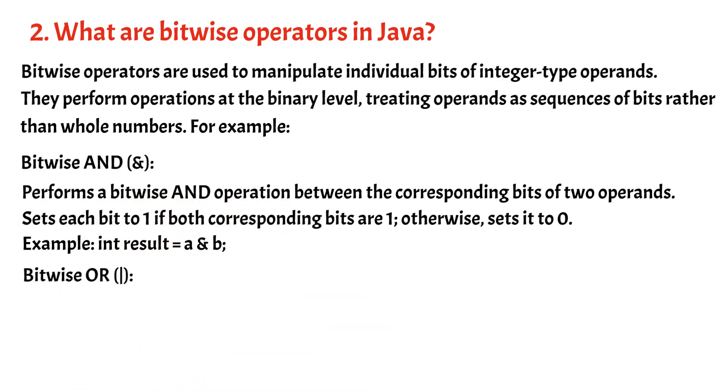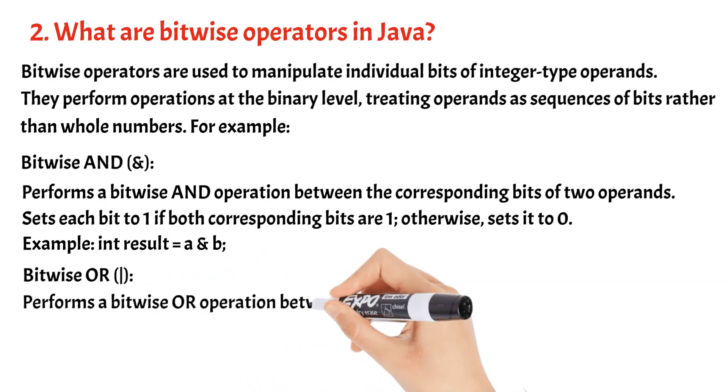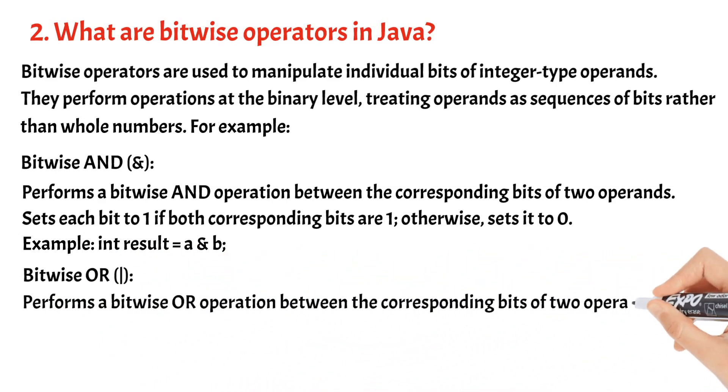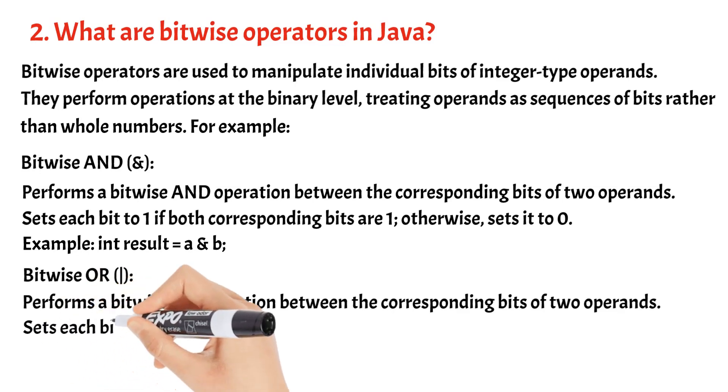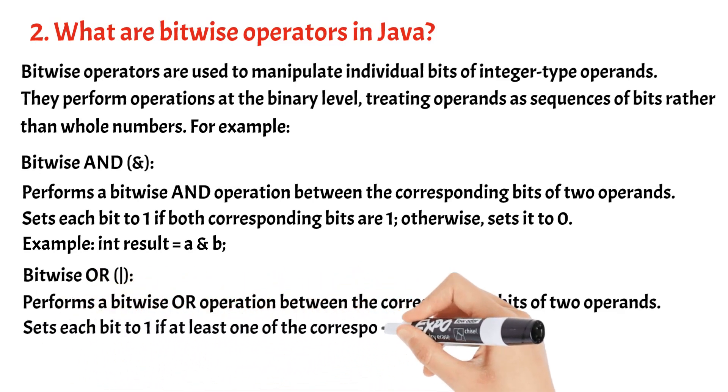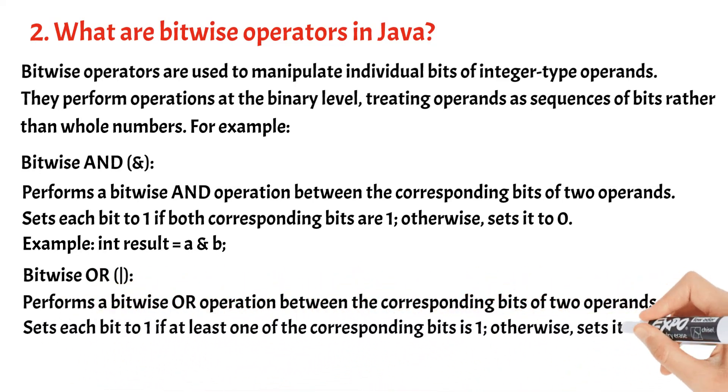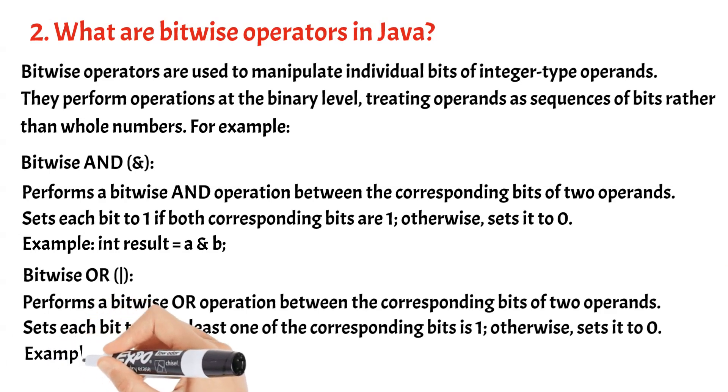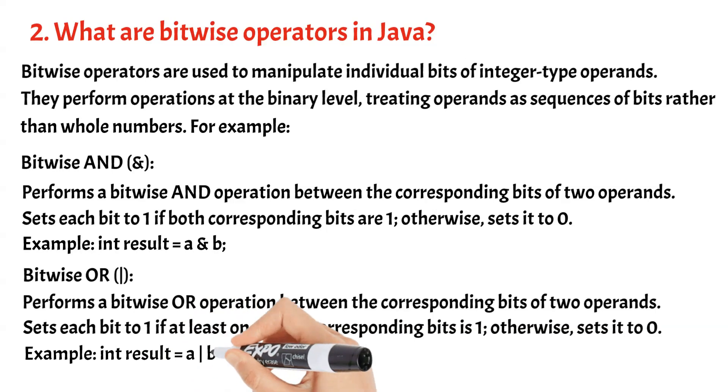Bitwise or (|) performs a bitwise or operation between the corresponding bits of two operands. Sets each bit to 1 if at least one of the corresponding bits is 1, otherwise sets it to 0. Example: int result = a | b.